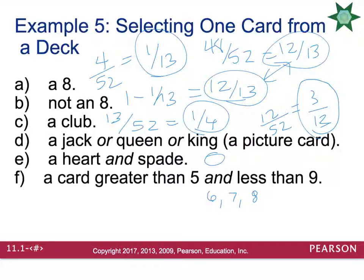There are four of each kind in the deck, so there's 12 cards total out of 52 possible. And if you reduce that, that would be 3 out of 13.